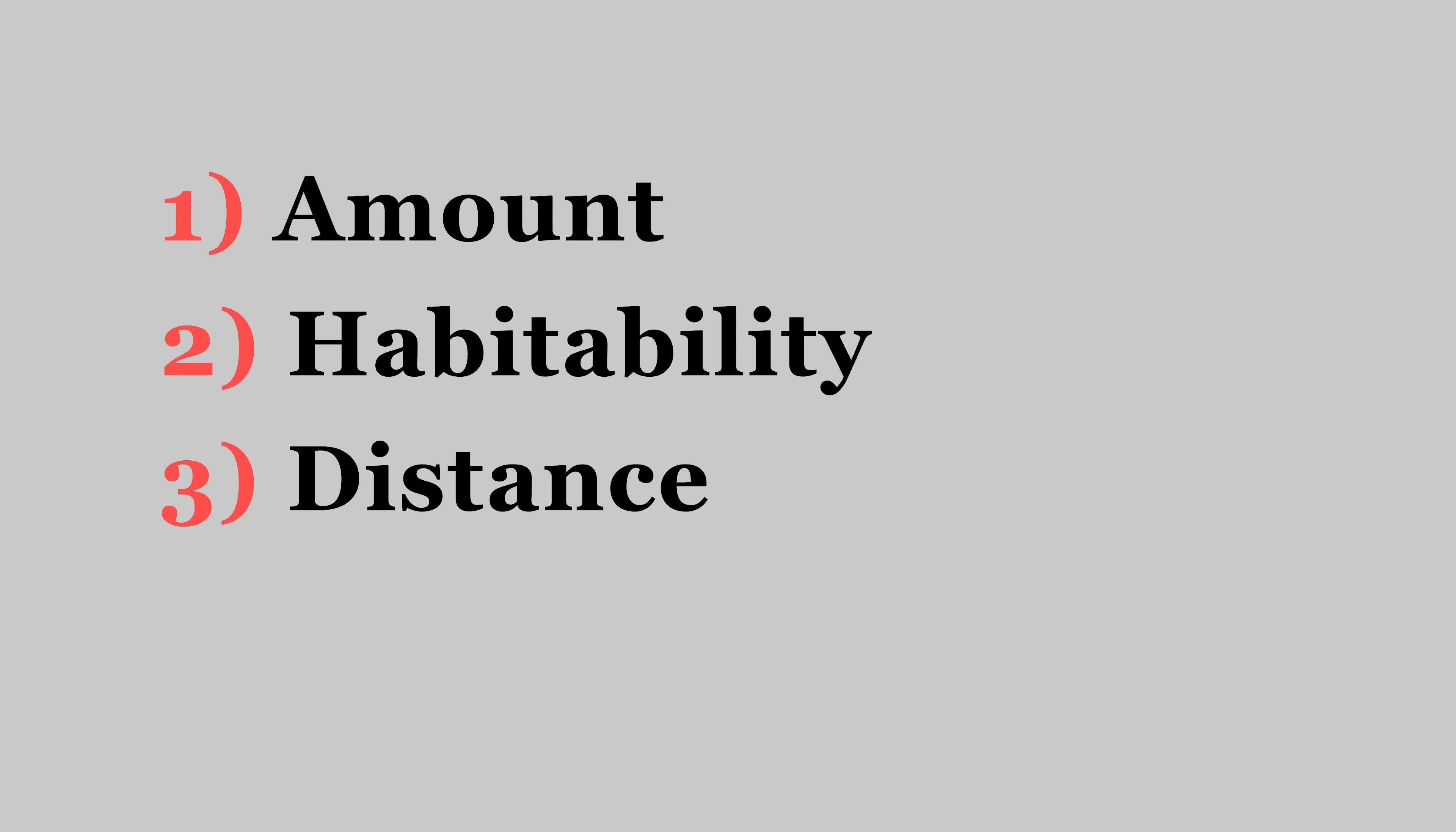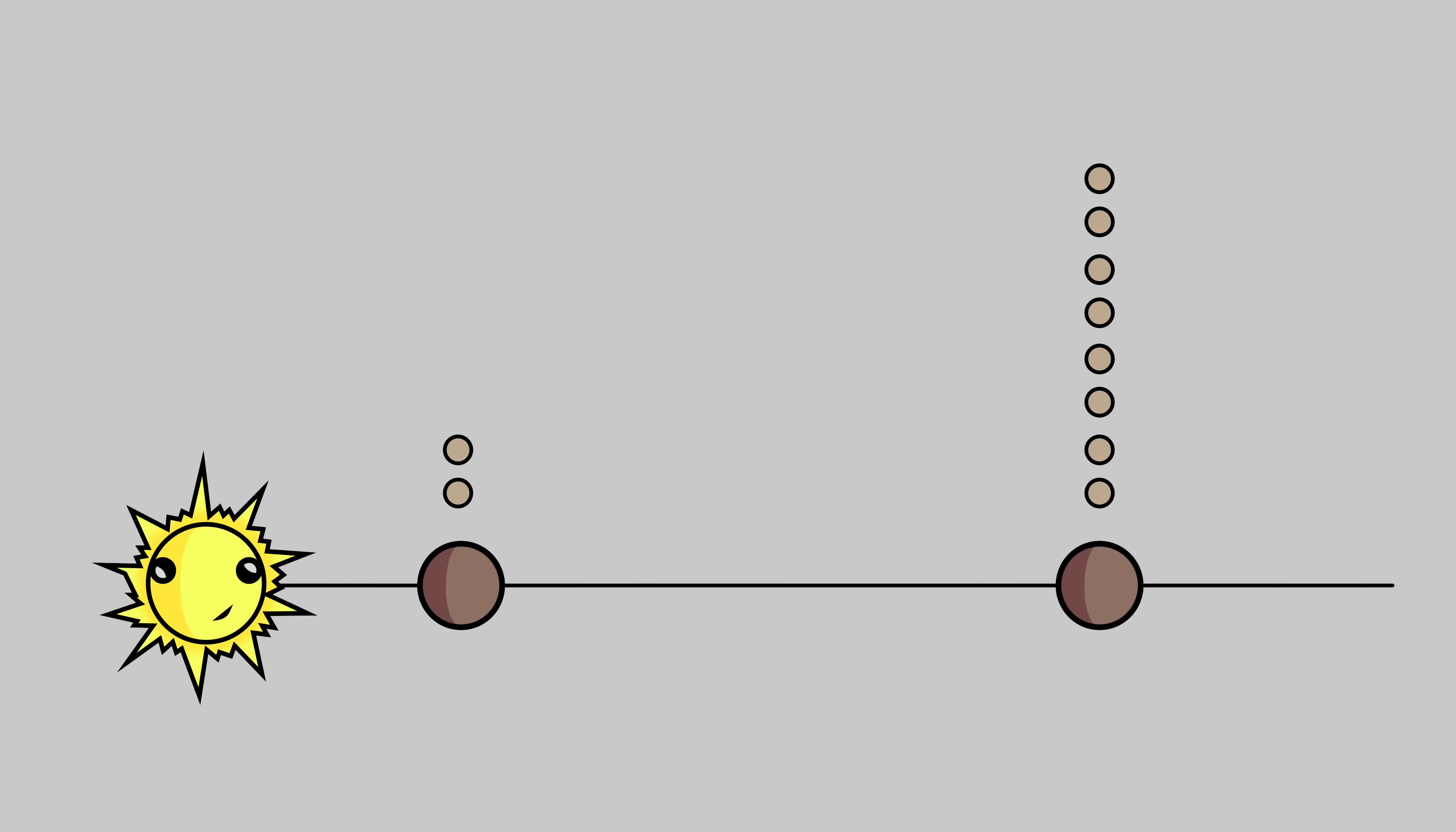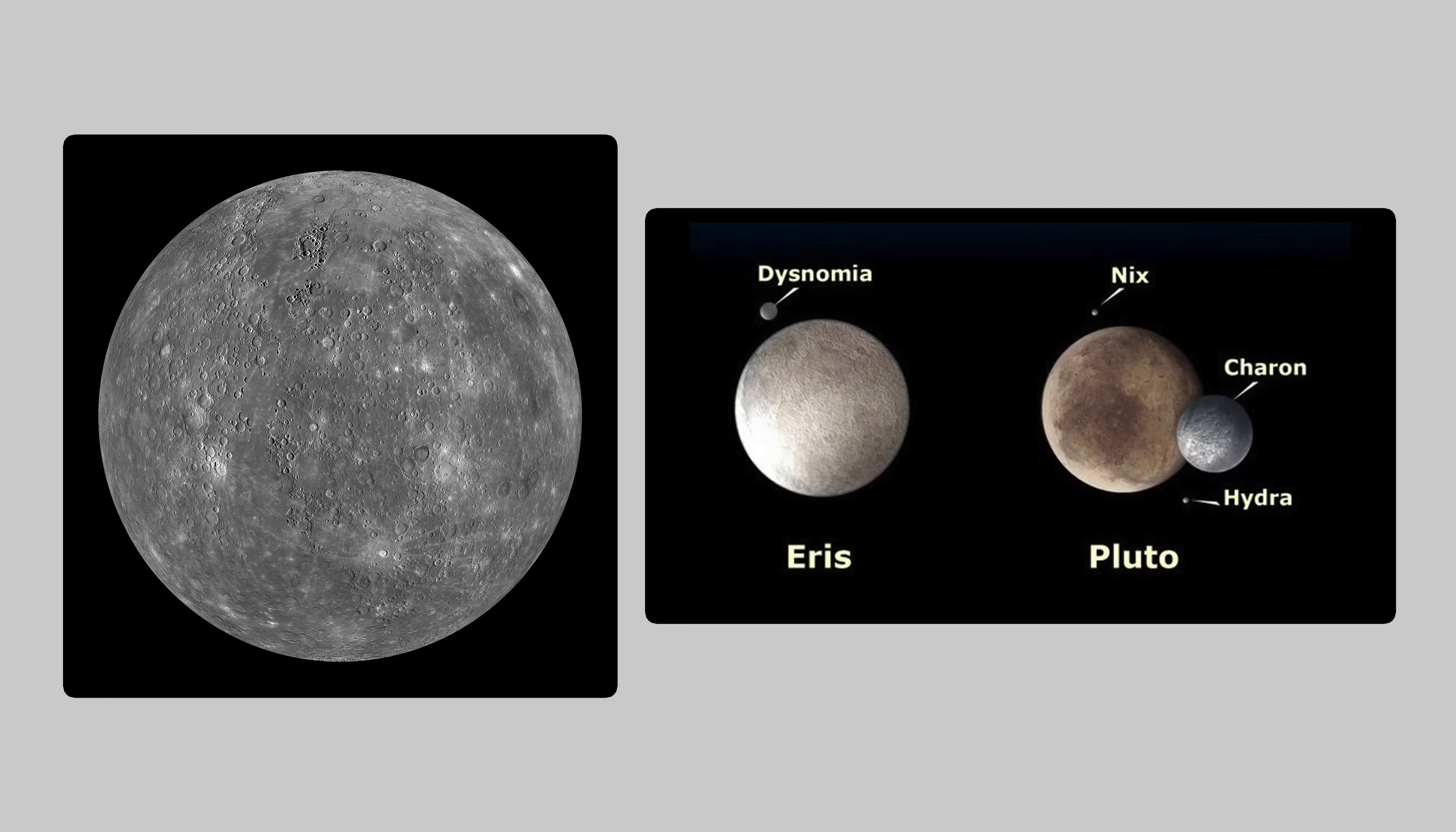Three, distance. Close in planets will have less moons than distant planets. Compare moonless Mercury with Pluto's veritable orgy of moons.